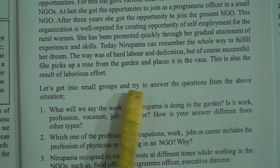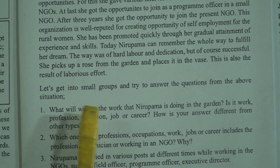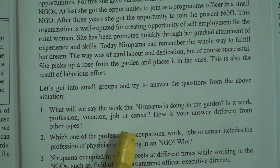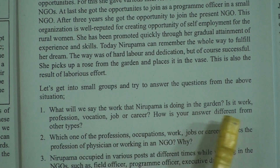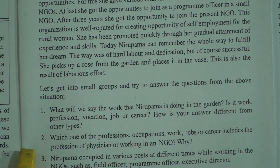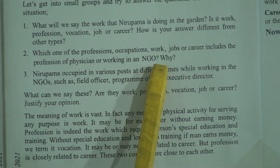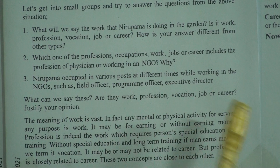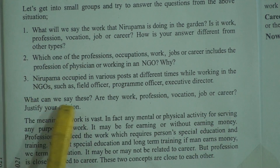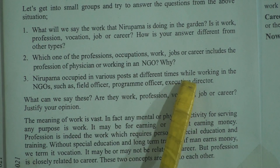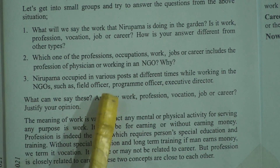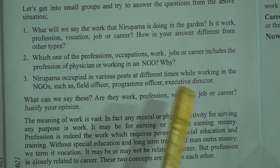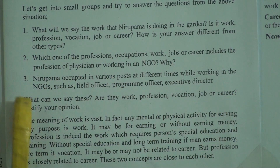Let's get into small groups and try to answer these questions from the above situation. Number 1: What will we say the work that Neu Poma is doing in the garden — is it work, profession, vocation, job or career? How is your answer different from other types? Number 2: Which one of the professions, occupations, work, jobs or career includes the profession of physician or working in an NGO? Why? Number 3: Neu Poma occupied various posts at different times while working in NGOs, such as field officer, program officer, executive director. What can we say this — work, profession, vocation, job or career? Justify your opinion.